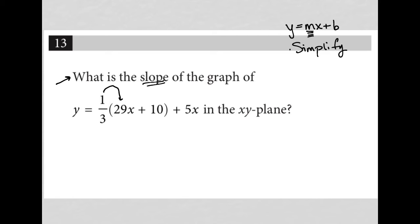I'm going to distribute this 1/3 across, and then see if I can combine like terms with the 5x. Let's start with the distribution. I have y = 1/3 times 29, which becomes 29/3 x, plus 1/3 times 10, which becomes 10/3, and then plus 5x.